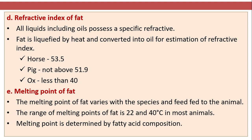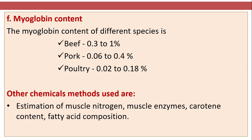The melting point of fat varies with the species and feed of the animal. The range of melting points is 22 to 40 degrees Celsius in most animals, determined by fatty acid composition. Myoglobin content differs by species: beef 0.3 to 1 percent, pork 0.06 to 0.4 percent, and poultry 0.02 to 0.18 percent.